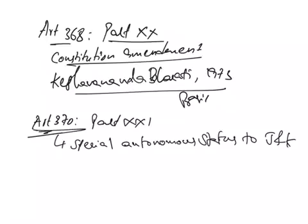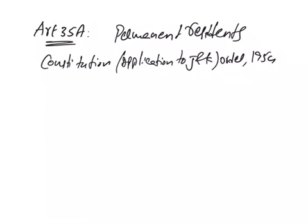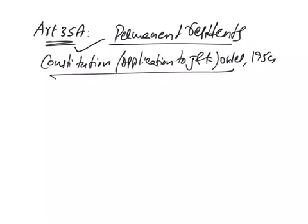Article 370, under Part 21 of the Constitution of India dealing with temporary, transitional, and special provisions, is a temporary provision granting special autonomous status to Jammu and Kashmir. Article 35A of the Constitution empowers the Jammu and Kashmir legislature to define the permanent residents of the state. This was added through the Constitution Order of 1954, issued under Article 370 by the President of India, and not by amending the Constitution under Article 368.